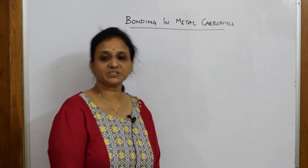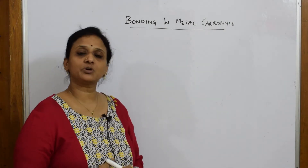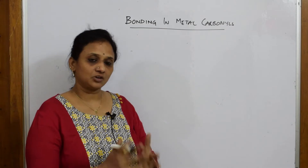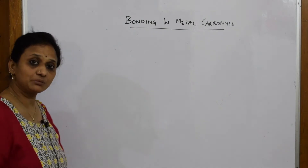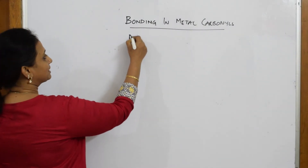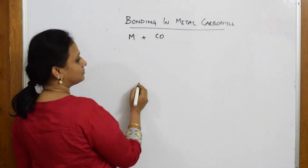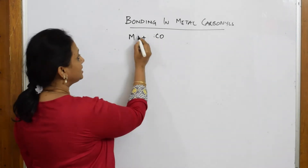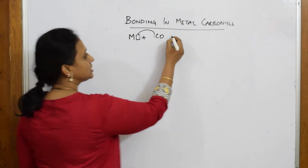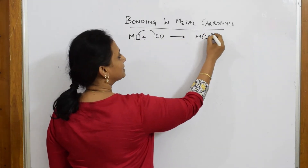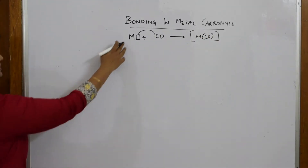Let us come back and see this concept: bonding in metal carbonyls. They may ask you to explain the bonding in metal carbonyl, so let us write the concept first and then go back to the examples. Whenever we speak about metal carbonyl, your metal — that is your D-block transition element — is going to combine with your carbonyl, which has a lone pair of electrons. The metal has a vacant d orbital, and together they form a bond called the metal carbonyl complex.